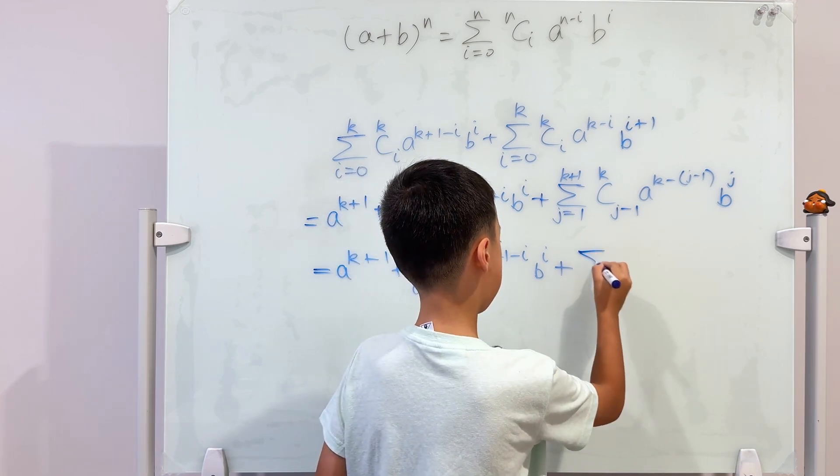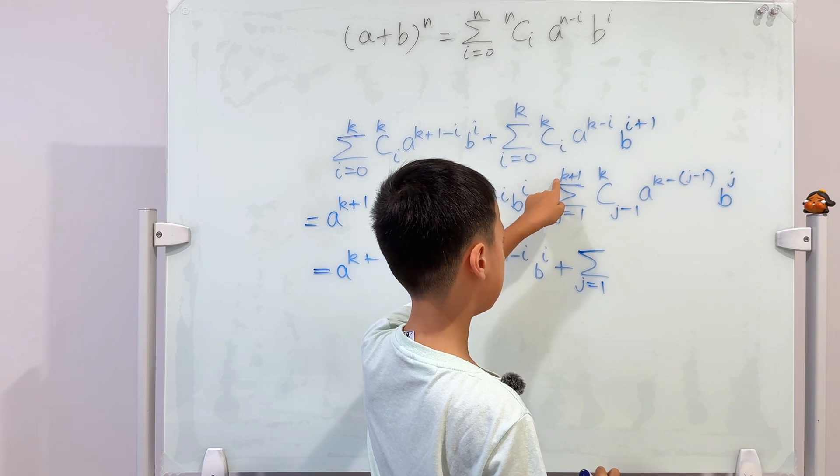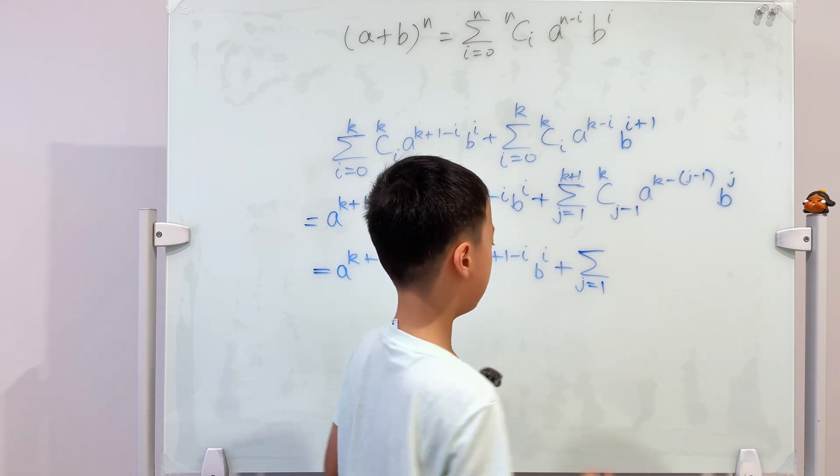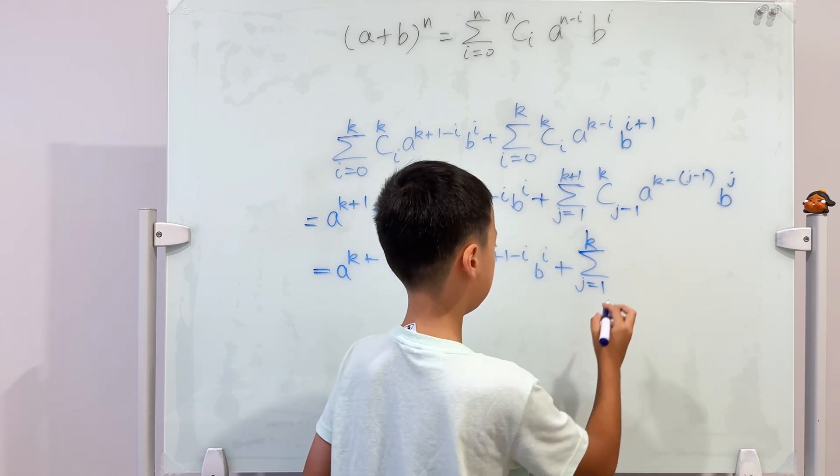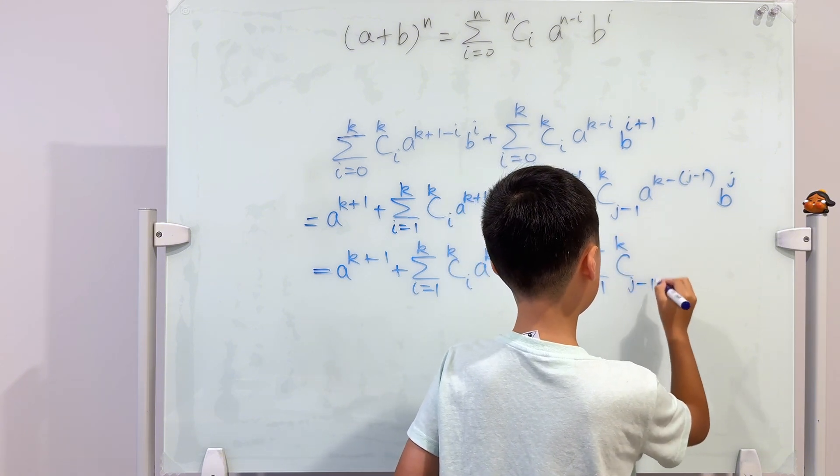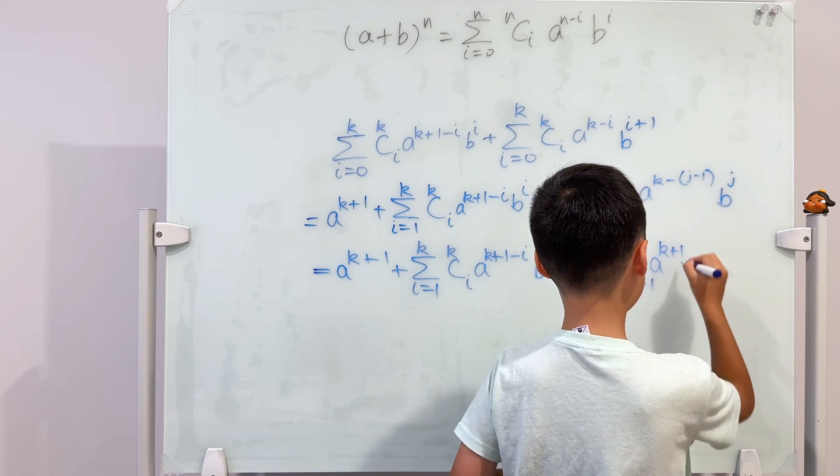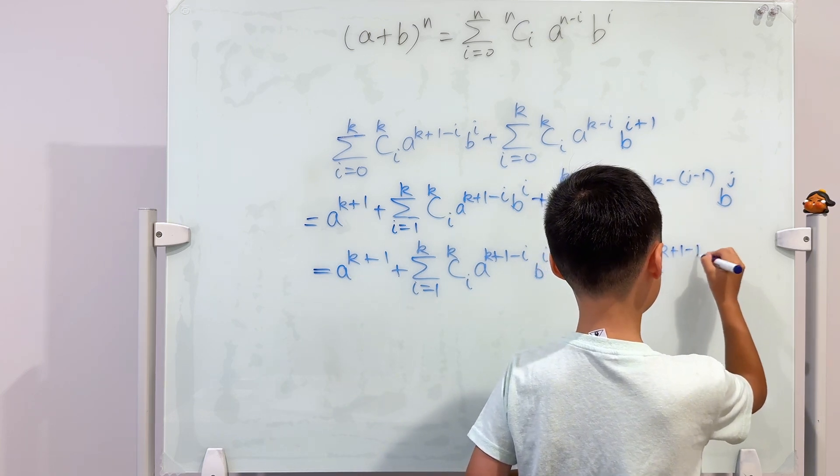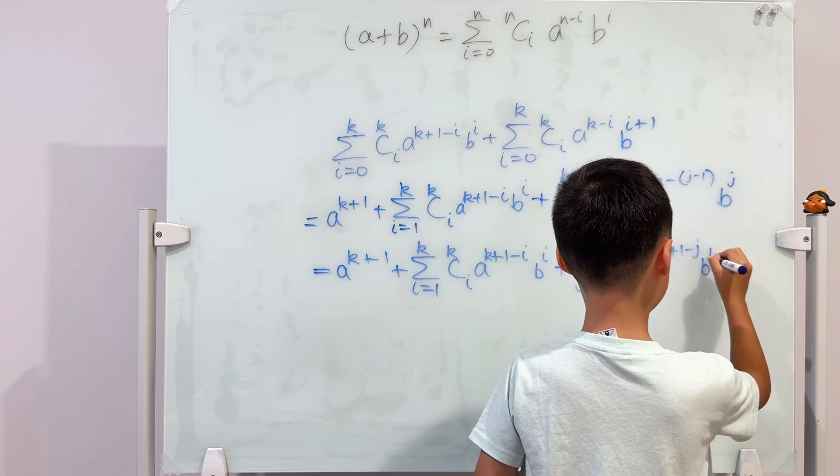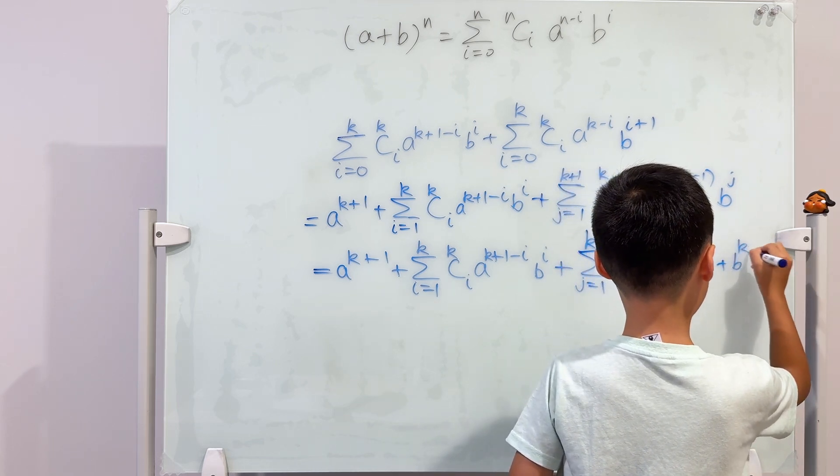So then it's still the sum j going from one, but not to k plus one because we took it out. So it's just going to k now. And then we copy the inside. K, I'll write the plus one first, and then I'll minus the j, b to the power of j, plus the last term, which is b to the power of k plus one.